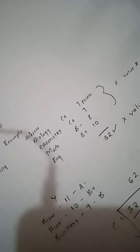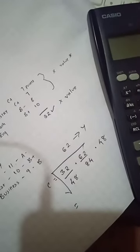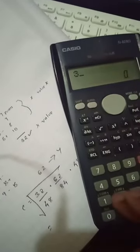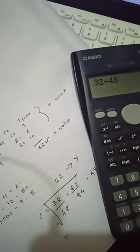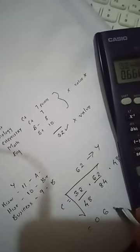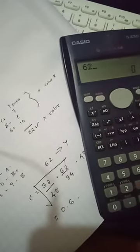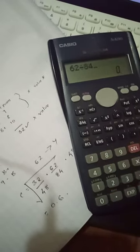Let's do the maths guys, let's get over it. So the score is 32 divided by 48, that is 0.6. 62 divided by 84, that is 0.7.